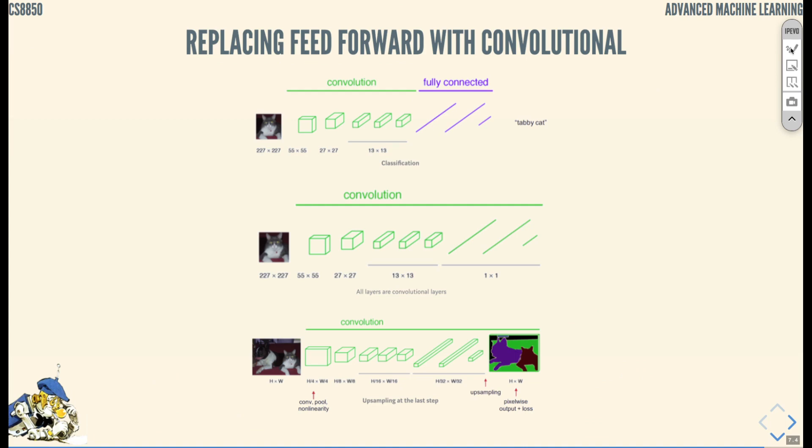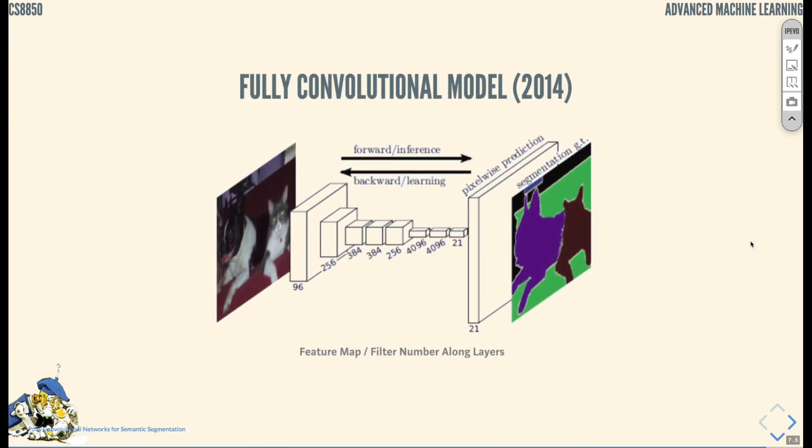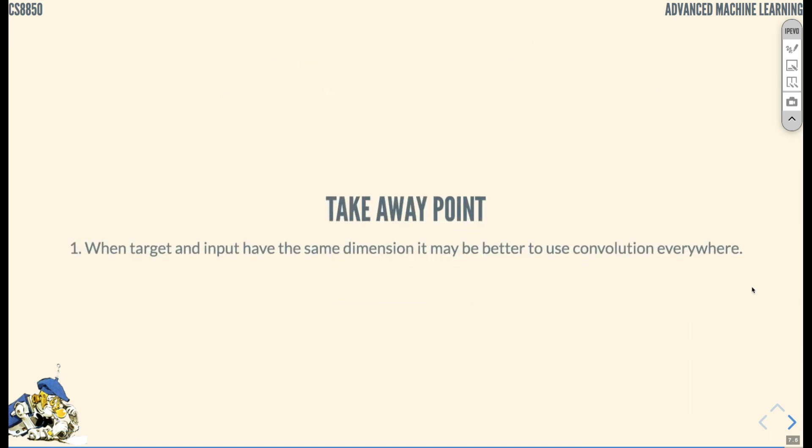Let's call it vanilla fully convolutional. That's how the full network looks: we have ground truth segmentation, we produce a pixel-wide prediction, and backpropagate to the input and perform gradient descent. Introduced in 2014, the takeaway is when target and input have the same dimension, it may be better to use convolution everywhere.